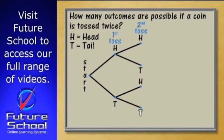From the start, we can follow the path of a head, which then can lead to a head or a tail in the second set of branches. Next, from the start we can follow the first branch of the tail to either a head or a tail on the second lot of branches.